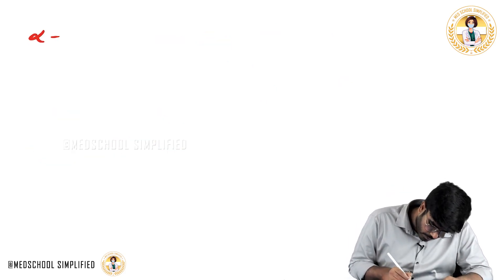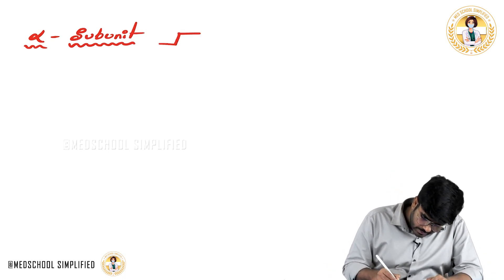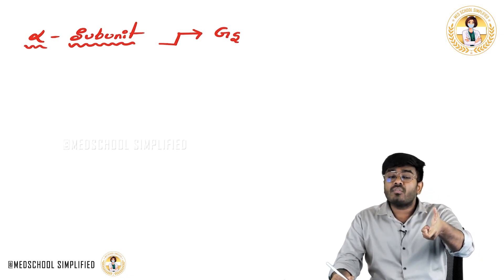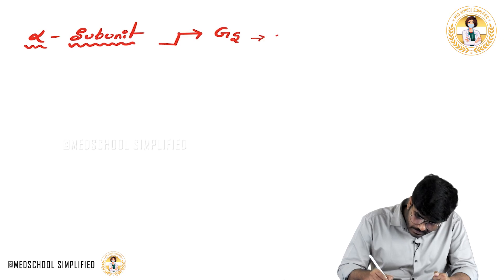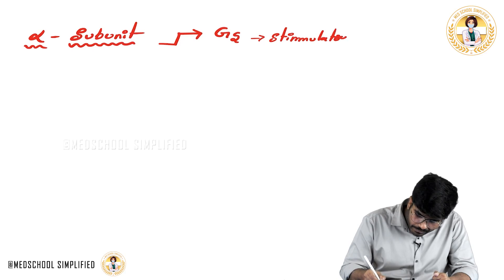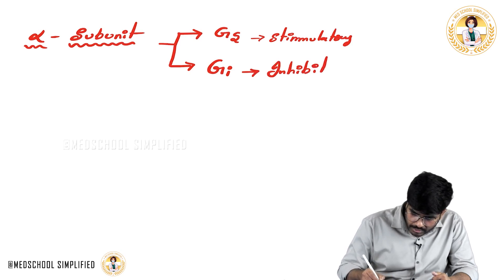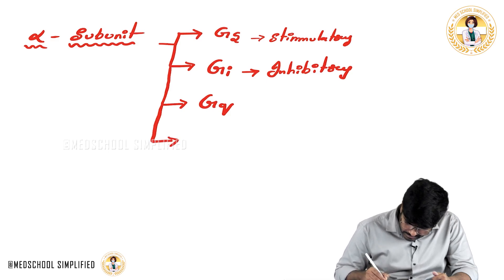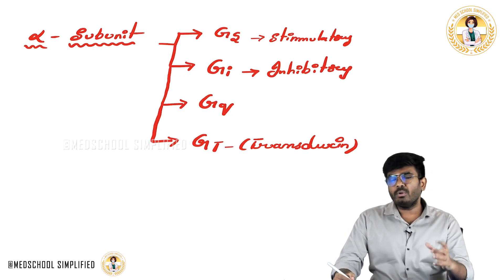Alpha subunits are of different types. There is alpha-S or Gs — stimulatory. There is Gi — inhibitory. There is Gq. And there is Gt — T for transducin. I am showing you four different types of G protein coupled receptors based on their alpha subunit: one with Gs (stimulatory), one with Gi (inhibitory), one with Gq, and one with Gt.